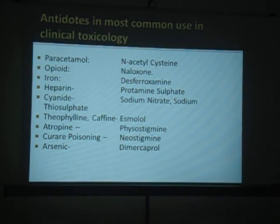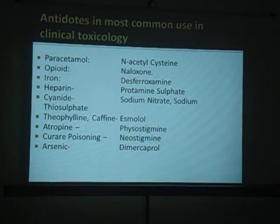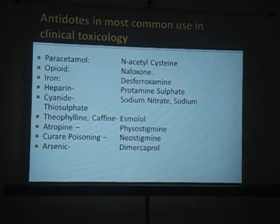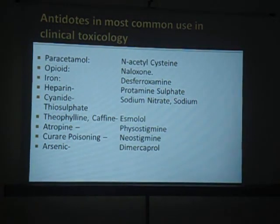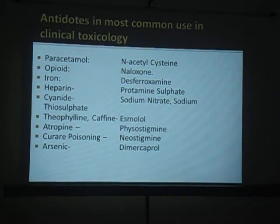Here is a list of specific antidotes. For all poisons we do not have antidotes, but for some we do. For paracetamol, the antidote is N-acetylcysteine. For opioid poisoning, we have naloxone, nalorphine. For iron poisoning, we have the iron chelating agent desferrioxamine. Heparin, if used in excess, we use protamine sulfate. For cyanide poisoning, we need amyl nitrate, sodium nitrate, or sodium thiosulfate - and nowadays we have hydroxocobalamin for the same purpose.